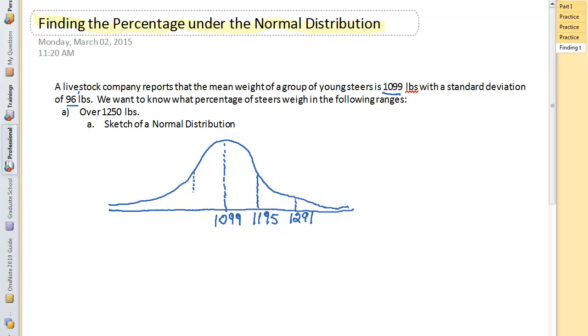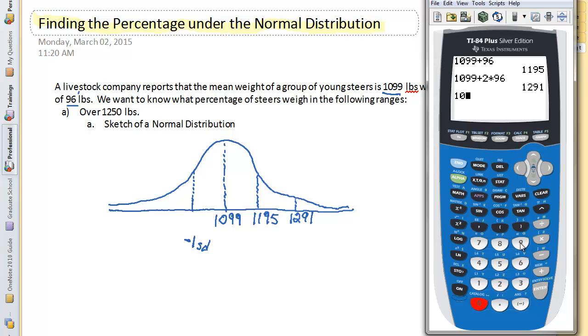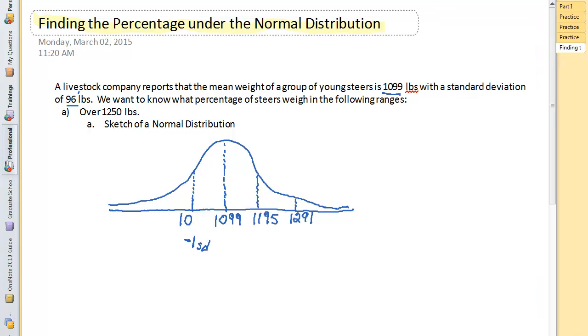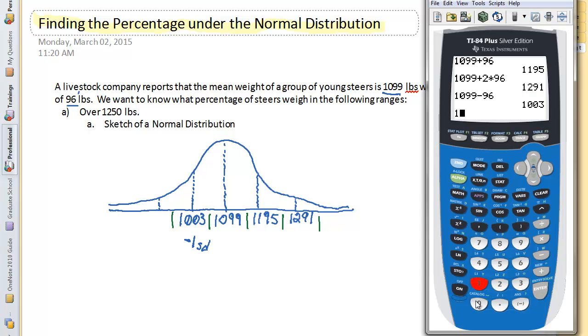Now I have to go the other direction. Here's my point of inflection, so I'm going back this way at negative 1 standard deviation. I need to subtract the 96 pounds now, so 1099 minus 96 gives me 1,003 pounds. Then I have to go back one more standard deviation. That's negative 2 standard deviations, so I'm going to take my mean and subtract from it two standard deviations to get 907.